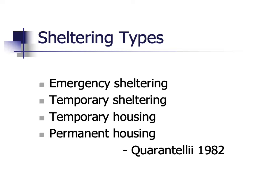The third type is temporary housing, such as an apartment if our home is being rebuilt after a disaster. And then, of course, once that home is reconstructed, we can re-enter it — and that is our permanent housing.